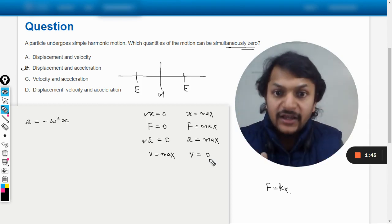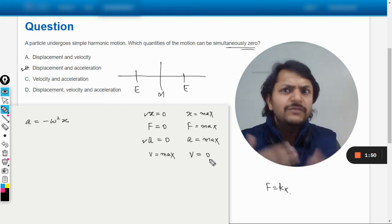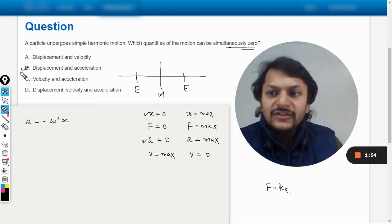You have to remember these tables. There have been many questions from this same concept again and again, so it is possible that they would be asking similar questions. So this becomes very important and the answer will be B.